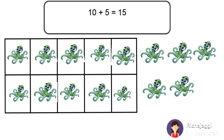1, 2, 3, 4, 5, 6, 7, 8, 9, 10. 10 inside the box. 11, 12, 13, 14, 15. So 10 plus 5 is equal to 15. There are 15 octopus in all.